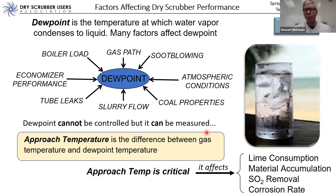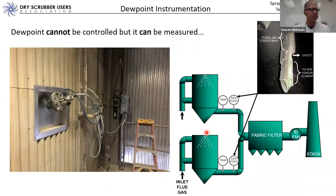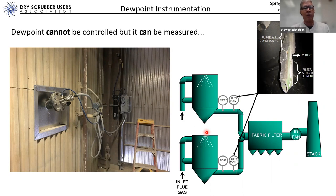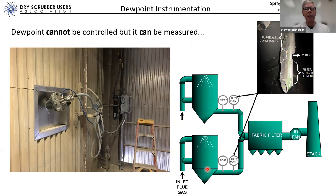We want to make sure that our approach temperature is a positive number — staying 30, 40, or 50 degrees above the dew point temperature at all times — to keep the dry scrubber dry and to optimize performance. Understanding that dew point temperature changes and that we need to stay above it by a safe margin is one of the critical aspects of SDA performance. It directly affects lime consumption, material accumulation, SO2 removal, and corrosion.